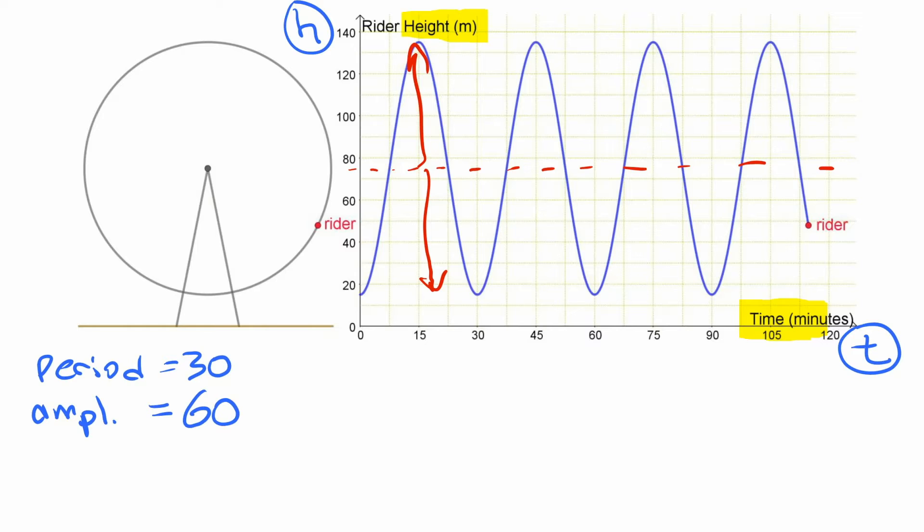We also need to know this value right there, the halfway point. Now I just drew that there and the reason I know it's there, it's actually at 75 is because it's halfway between the top and the bottom. The top over here is 135 and the bottom is 15 and the halfway point of those two things is 75. If you're not sure what that is, you can work it out just by finding the average of those two. So vertical displacement is 15 plus 135 divided by 2, which is 150 over 2, which is 75.